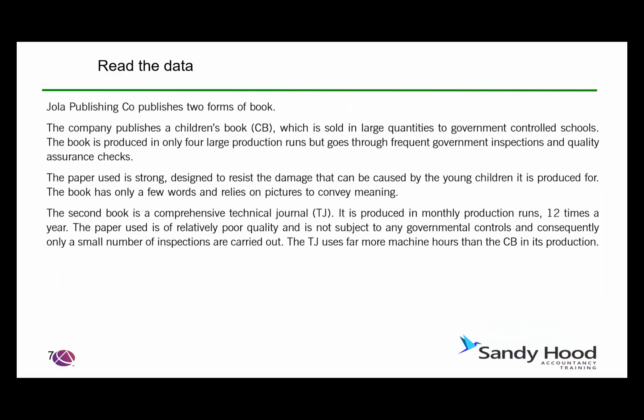Here's the data. I've identified that there are only going to be four production runs for the CB. That should lower the overhead cost because there's a smaller number of production runs. But CB has frequent government inspections, which is likely to mean higher quality costs. The TJ is produced in monthly production runs — more production runs — so we would expect more setup costs for TJ. TJ is not subject to governmental controls, so we would expect fewer quality costs allocated there, and they use far more machine hours.